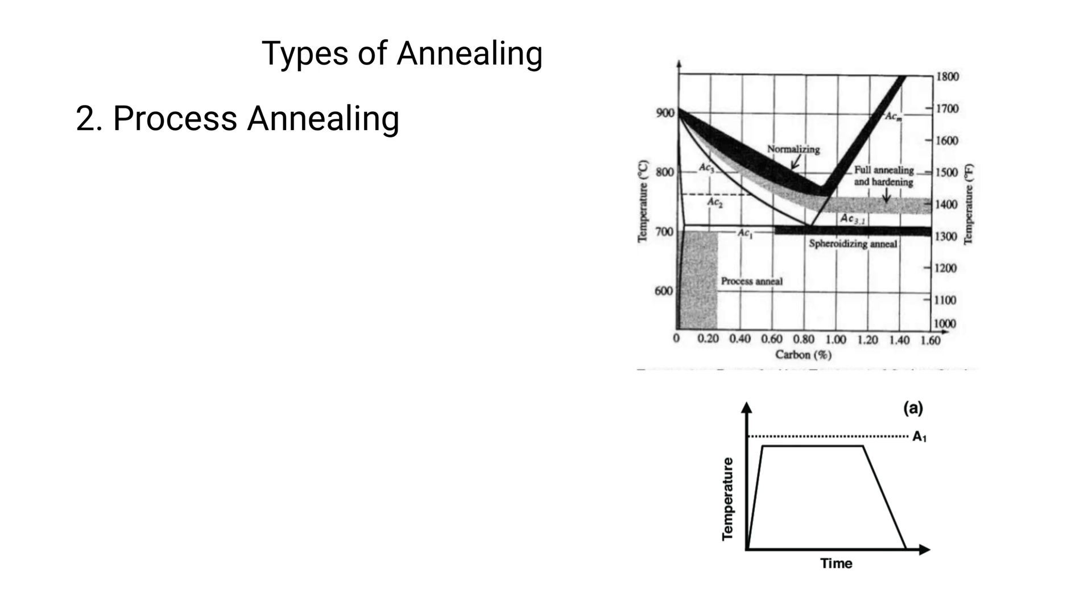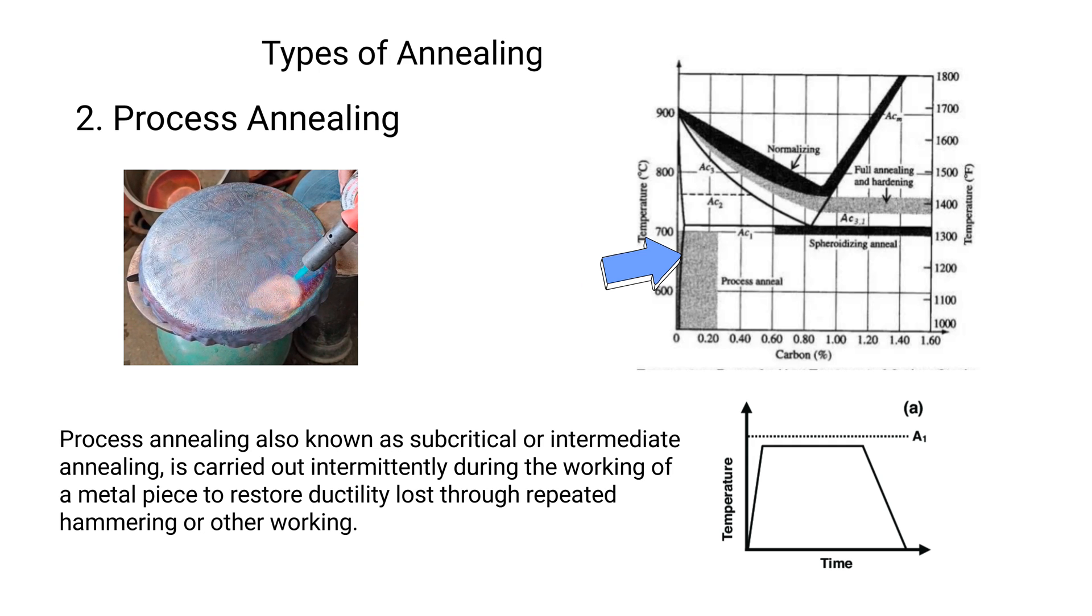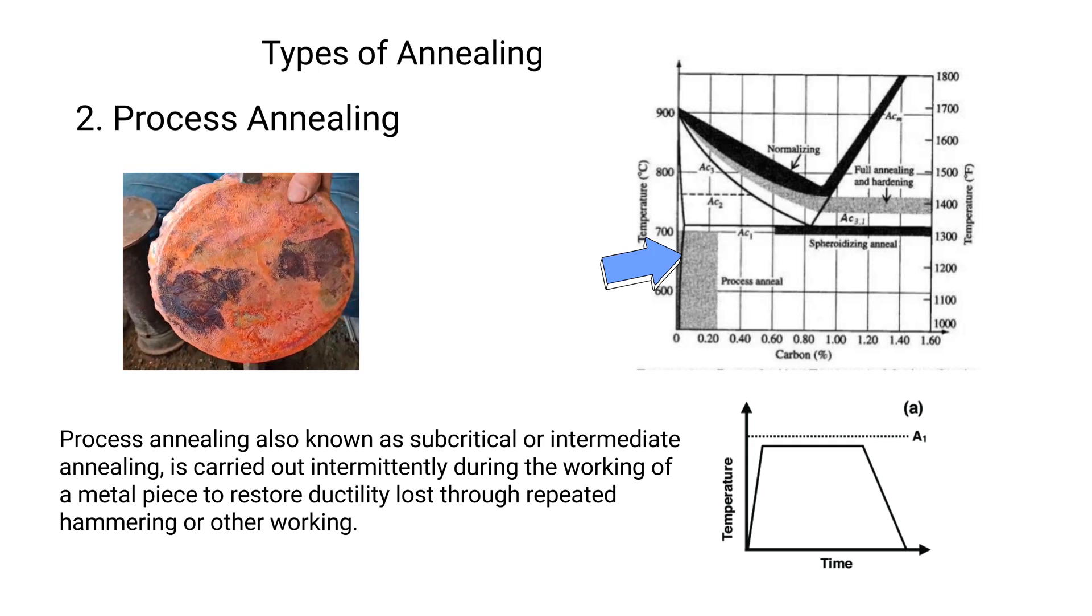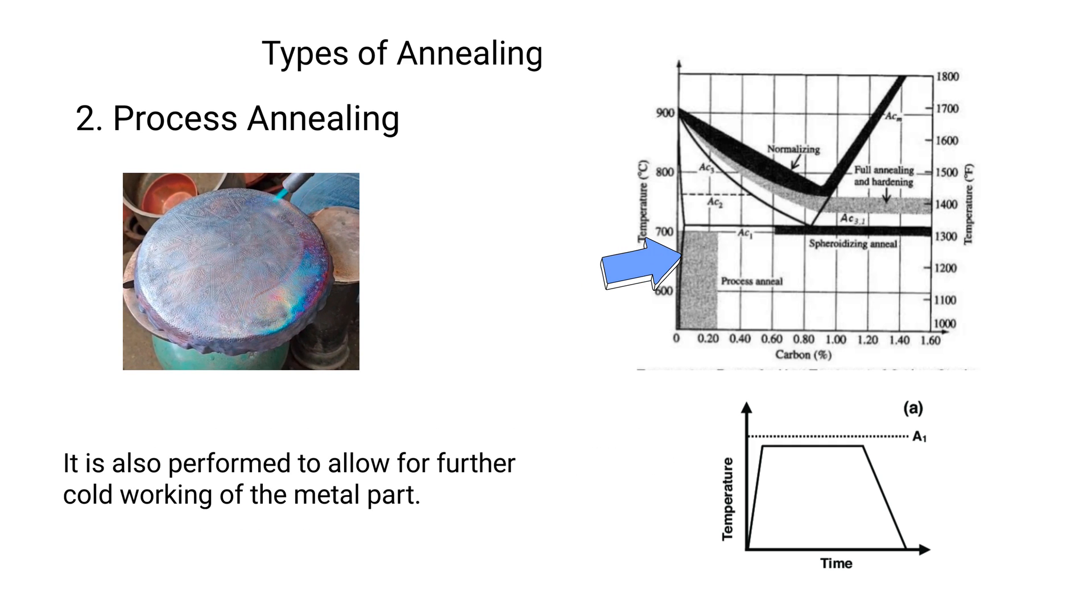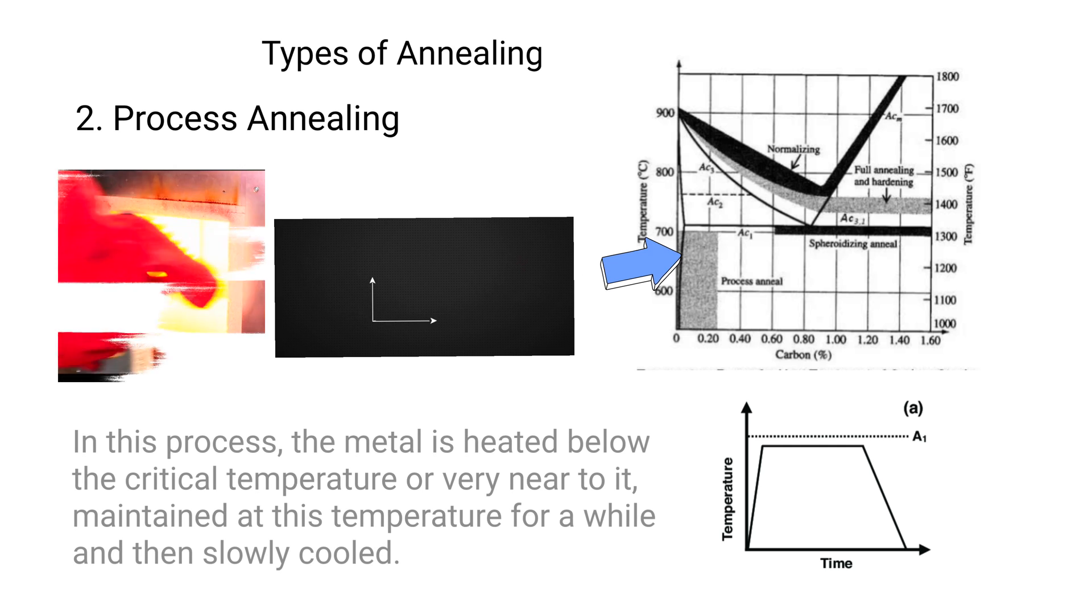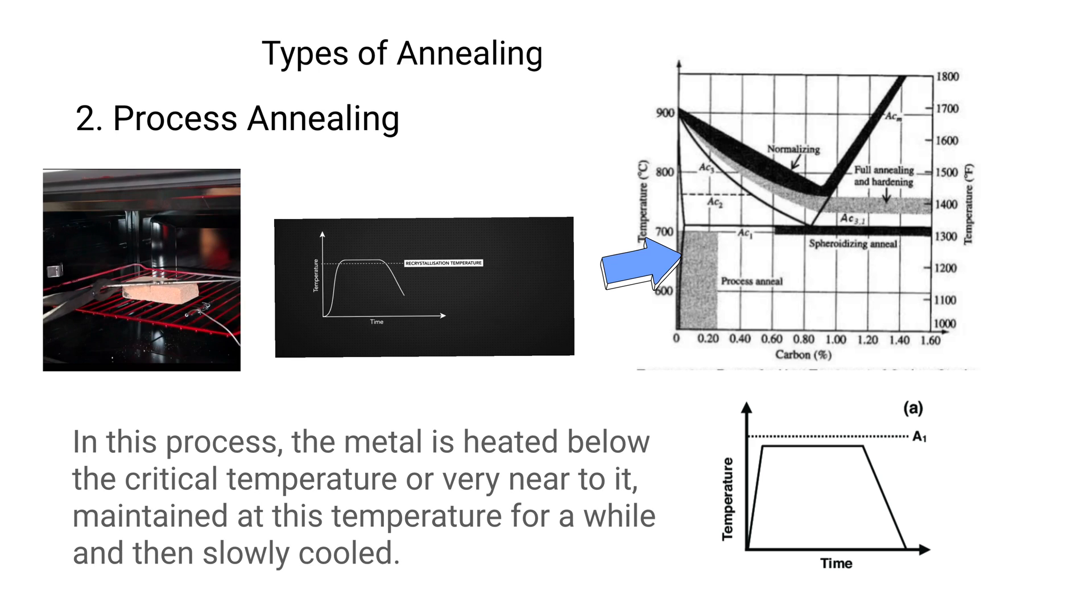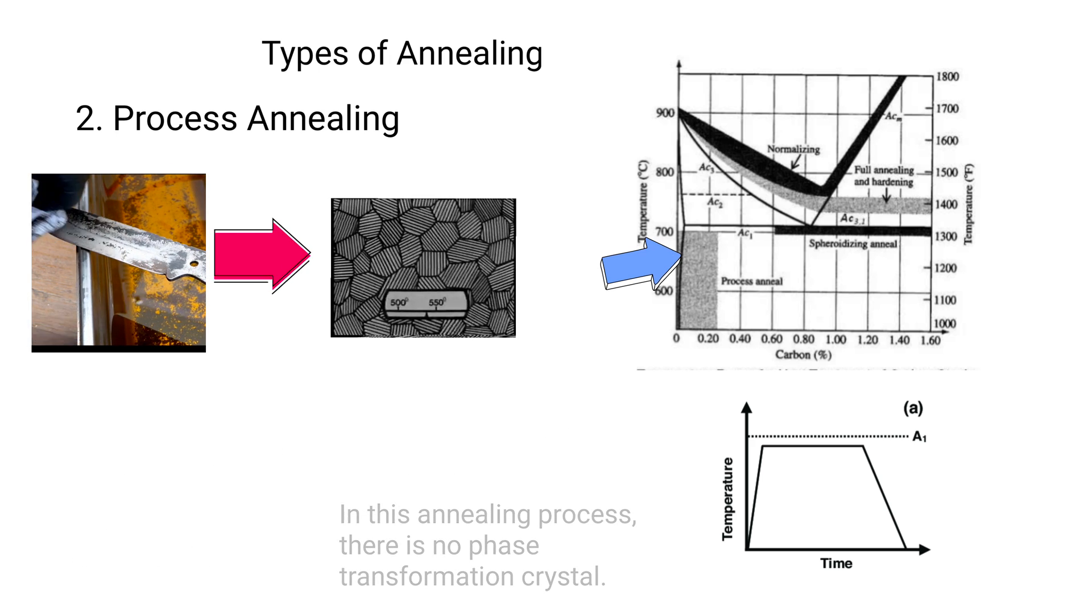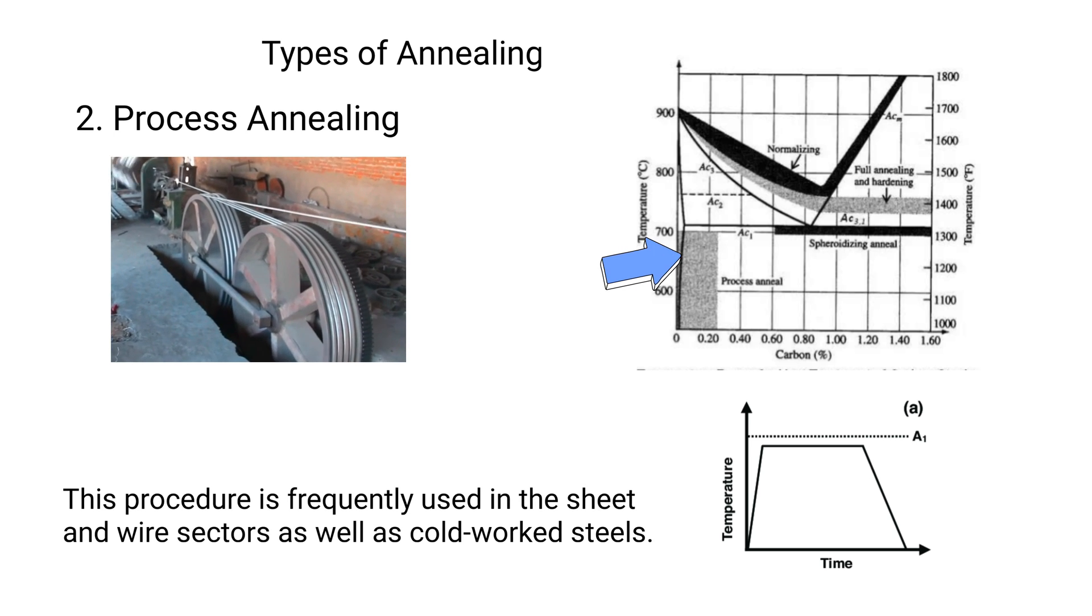2. Process annealing. Process annealing, also known as subcritical or intermediate annealing, is carried out intermittently during the working of a metal piece to restore ductility lost through repeated hammering or other working. It is also performed to allow for further cold working of the metal part. In this process, the metal is heated below the critical temperature or very near to it, maintained at this temperature for a while, and then slowly cooled. In this annealing process, there is no phase transformation. This procedure is frequently used in sheet and wire sectors as well as cold worked steels.